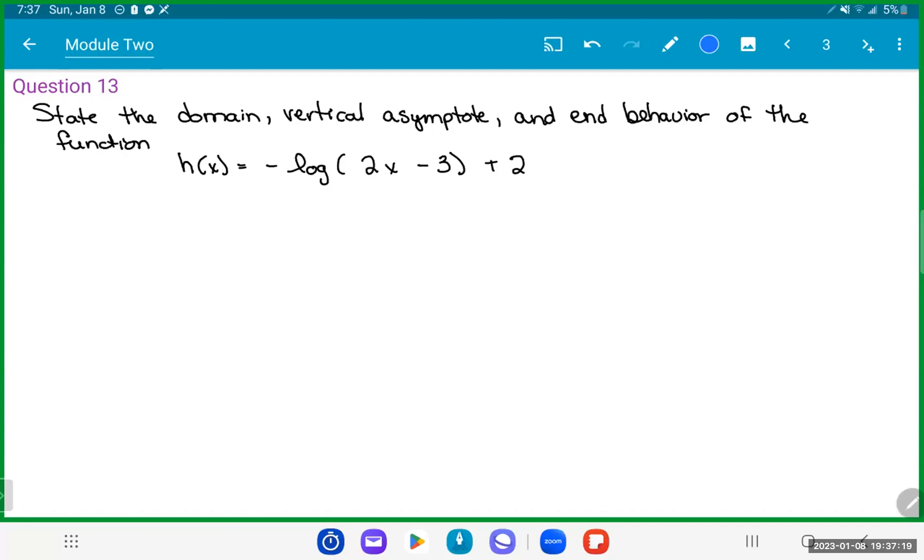For this problem, we're going to look at number 13 out of module number two. This problem is asking us to state the domain, the vertical asymptotes, and the end behavior of the given function here, h of x equals negative log of 2x minus 3 plus 2.